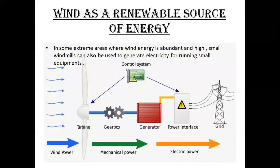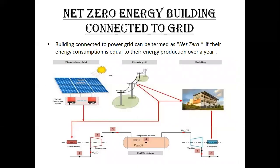Wind as a renewable source of energy: in some areas where wind energy is available, small windmills can be used to generate electricity for running small equipment. This diagram illustrates how wind energy is used as a source of energy. Buildings connected to the power grid can be termed net zero if their energy consumption is equal to their energy production over a year. A photovoltaic field is connected to the electric grid to supply electricity to buildings.